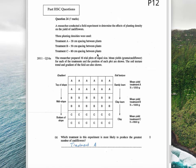This last question: a researcher conducted a field experiment to determine the effects of planting density on cauliflowers. Three planting densities used: A 20 centimeters apart, B 50 centimeters apart, and C 80 centimeters apart. This box here shows that A was planted at the top of the slope, B mid slope, C bottom slope. It says the yield from A was 1250 grams, yield from B 1500 grams, and yield from C 1850 grams. Which treatment in this experiment is most likely to produce the greatest number of cauliflowers? All this other information about soil and where they're planted are relevant for the questions that follow which aren't related to this dot point.